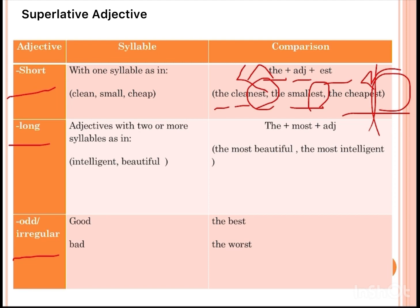The long adjective has two or more syllables. For example, 'intelligent' has three syllables: in-tel-li-gent. 'Beautiful' has three syllables, and 'expensive' also has three syllables. If the adjective has two or more syllables, we call it a long adjective, while a short adjective has just one syllable.